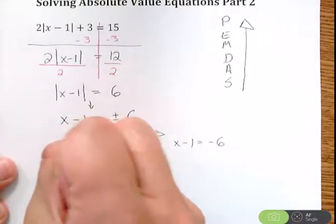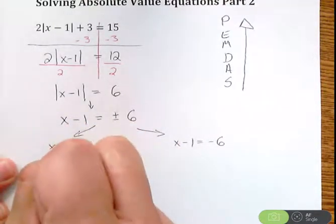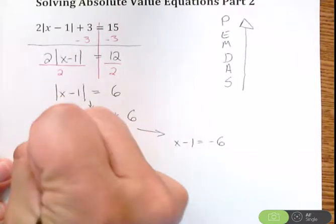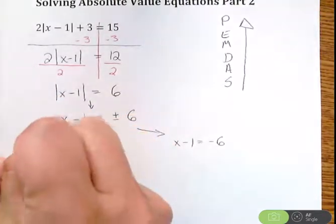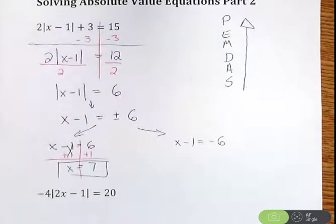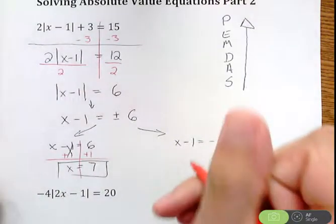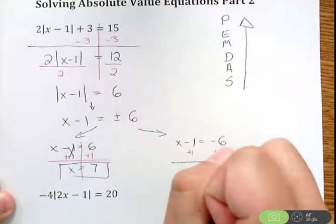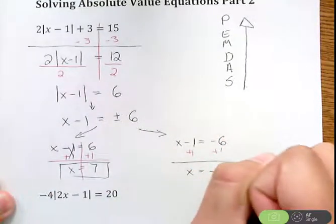So we're going to add 1 here, add 1. That will give us x equals 7. And I could plug that in, check it. It will work. For the sake of this video, I'm not going to show that. Add 1 plus 1 plus 1. We get x equals negative 5.